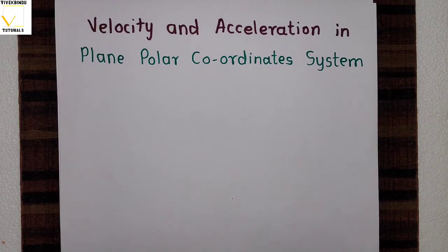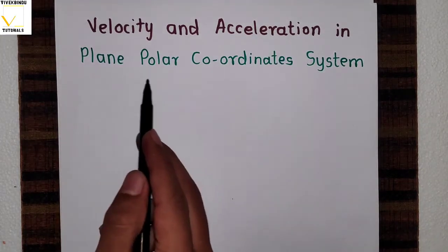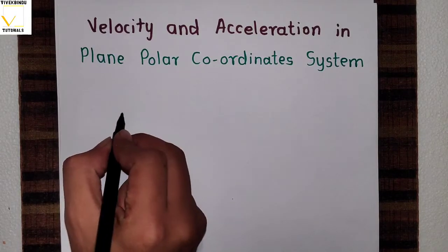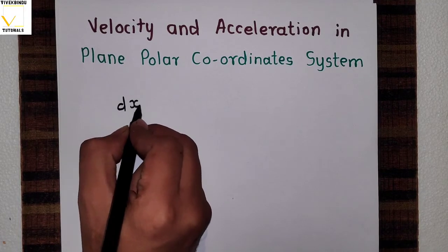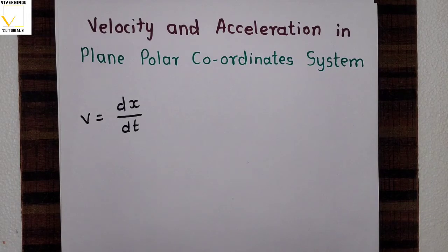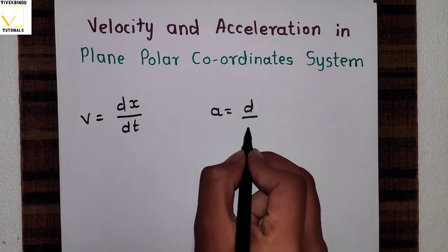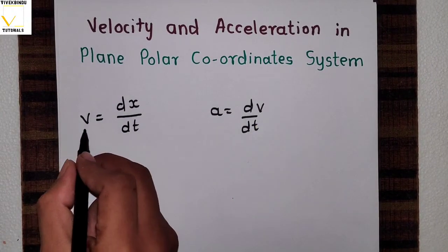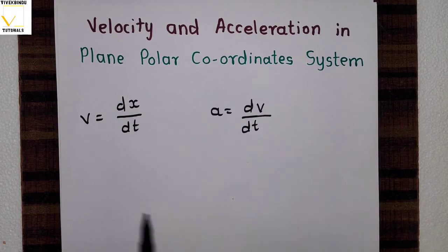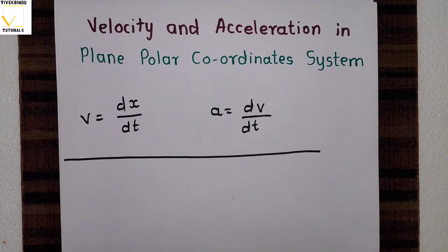Hello everyone, welcome to my channel. In this video we will see what is velocity and acceleration in plane polar coordinate system. Velocity is rate of change of displacement and acceleration is rate of change of velocity. So velocity is dx/dt and acceleration is dv/dt. This is generally represented in the Cartesian coordinate system.